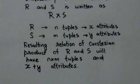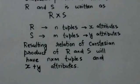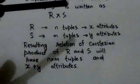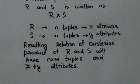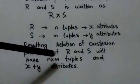The result of the Cartesian product of relations R and S will be a relation whose tuples are formed by combining every tuple of relation R with every tuple of relation S. If relation R has N number of tuples and relation S has M number of tuples, then the resulting relation will have N into M tuples.